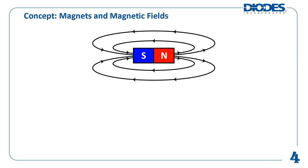Magnetic flux is the measurement of the total magnetic field that passes through a given area. The SI unit of measurement for magnetic flux is the Weber. For Hall Effect sensor applications, the concept of magnetic flux density is more important. Magnetic flux density is the amount of magnetic flux per unit area. The SI unit of measurement for magnetic flux density is the Tesla. However, the Gauss is also very commonly used to denote magnetic flux density, including Diodes' own Hall Effect Sensors products. 10 Gauss is equal to 1 millitesla.